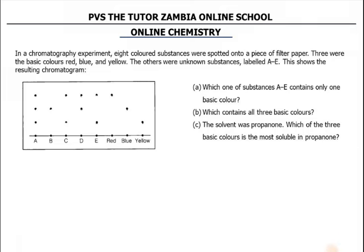Hello ladies and gentlemen, welcome to this video on PVSA Tutor. This question says in a chromatography experiment, eight colored substances were spotted onto a piece of filter paper. Three were the basic colors red, blue, and yellow, and the others were unknown substances labeled A to E. This shows the resulting chromatogram.